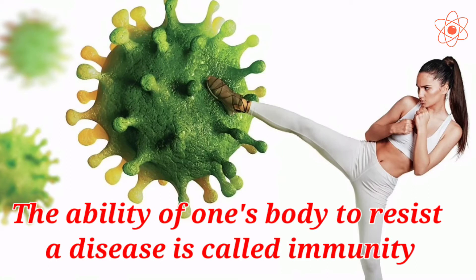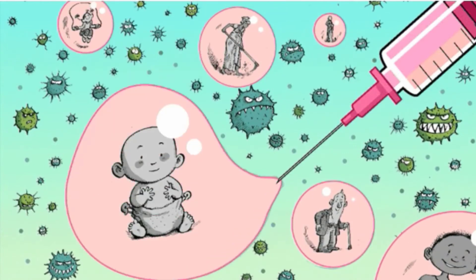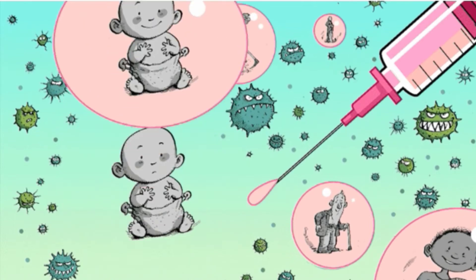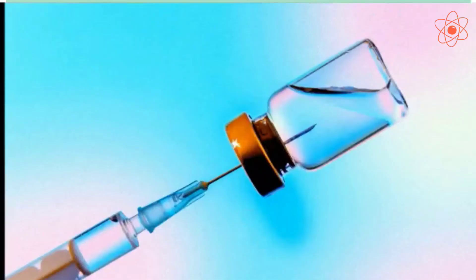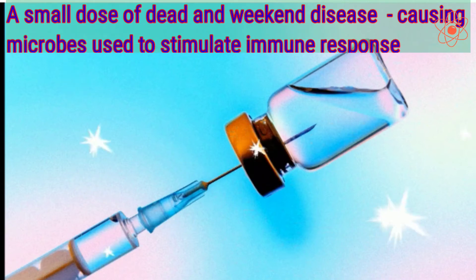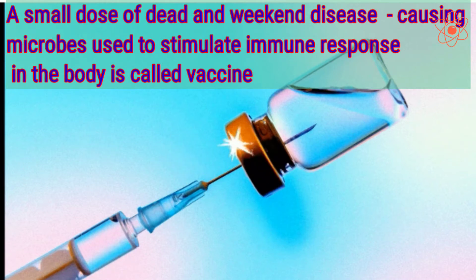The ability of one's body to resist a disease is called immunity. Immunity against a particular disease can be developed by a technique called vaccination. A vaccine is a small dose of dead and weakened disease-causing microbes used to stimulate immune response in the body.